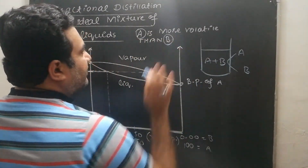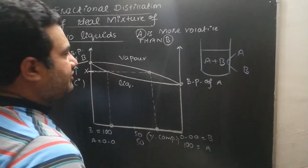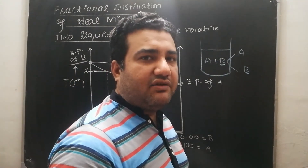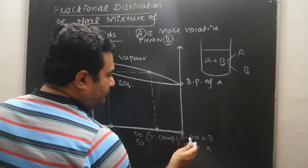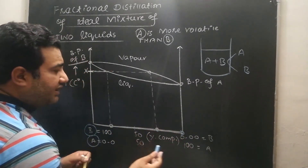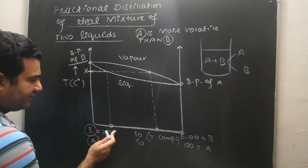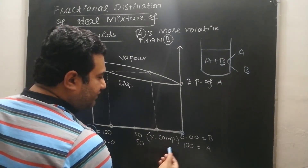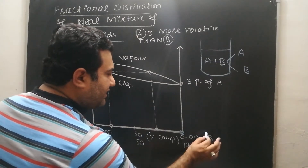Component A is more volatile than B. Both are liquids, but A has more volatility compared to B, and when mixed they form an ideal solution. When we study different ideal solutions of A and B with different compositions — for example, pure B at one end, pure A at the other end, and various mixtures like 10% A / 90% B, 50% / 50%, or 90% A / 10% B — this axis shows the full range of compositions with respect to the percentage of A and B.